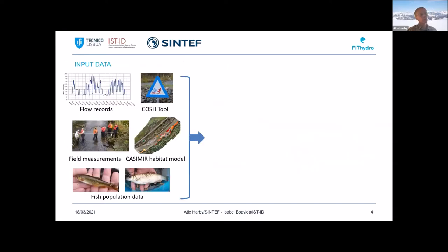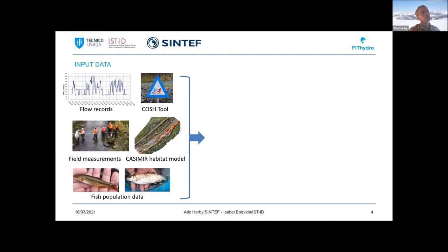The tool is meant to be used at an overview level but also at a detailed level. You need flow records that can be assessed through the COSCH tool we developed. You will probably also need to do some field measurements to get the river structure, which can be used as input to a habitat model — detailed or less detailed — and you need information on the fish population data.